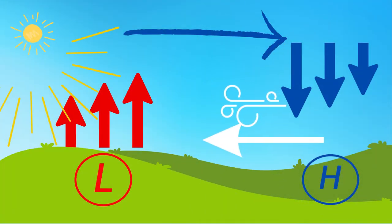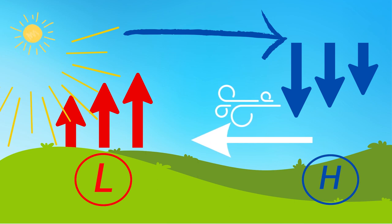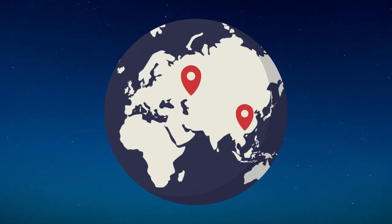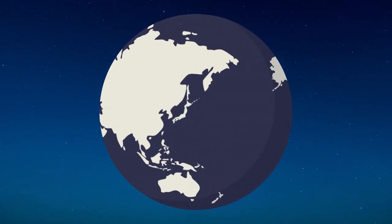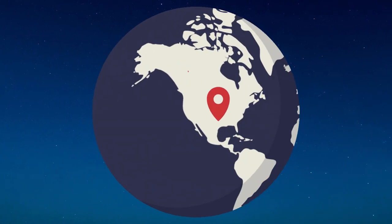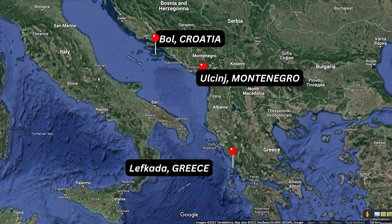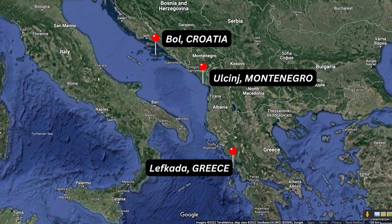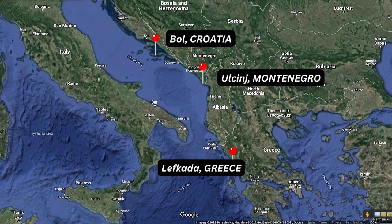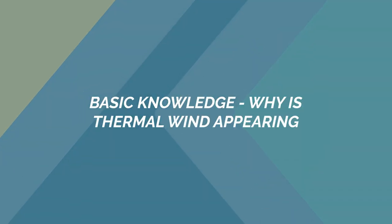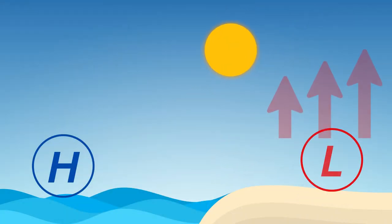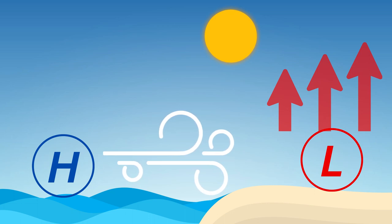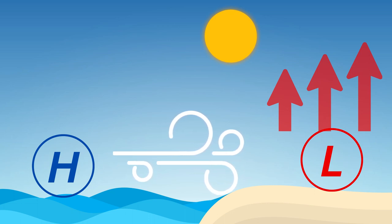Thermal wind occurs exactly like normal wind, because of differences in pressure — but this time you cannot see the difference in pressure on the forecast. Thermal wind occurs everywhere around the world, but only in some places does the wind get strong enough to enjoy kitesurfing. The water should be cold, and once the sun heats up the land — which most of the time starts from noon — the air on the land rises and gets replaced by air from the sea.